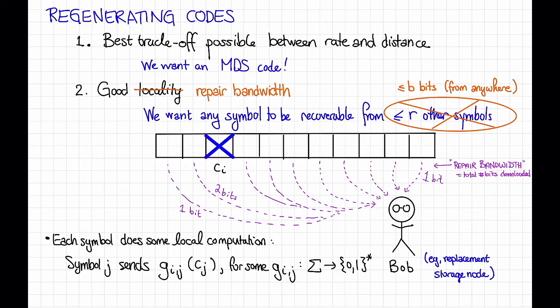Now, from this information that he receives, Bob is supposed to learn the missing symbol c_i. So that, at least informally, is the definition of a regenerating code. A regenerating code is an MDS code so that low bandwidth repair of any one symbol is possible. So how do we get a regenerating code? In the next few videos, we'll see that our old favorite code, Reed-Solomon codes, will do the trick.